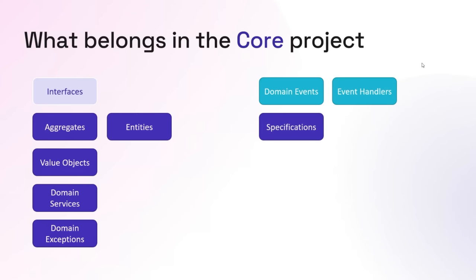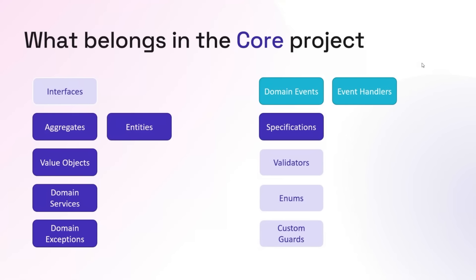You may also have specifications here. Specifications are an excellent and underused pattern for defining queries. If you look at your code and there are LINQ statements everywhere — in your services, views, controllers, and endpoints — specifications help you pull that back into your domain model where it's centralized, testable, well-named, and easy to reuse. You don't end up with different blobs of LINQ code scattered around. You might also have validators, enums, and custom guard clauses to make sure certain edge cases or invariants never happen.